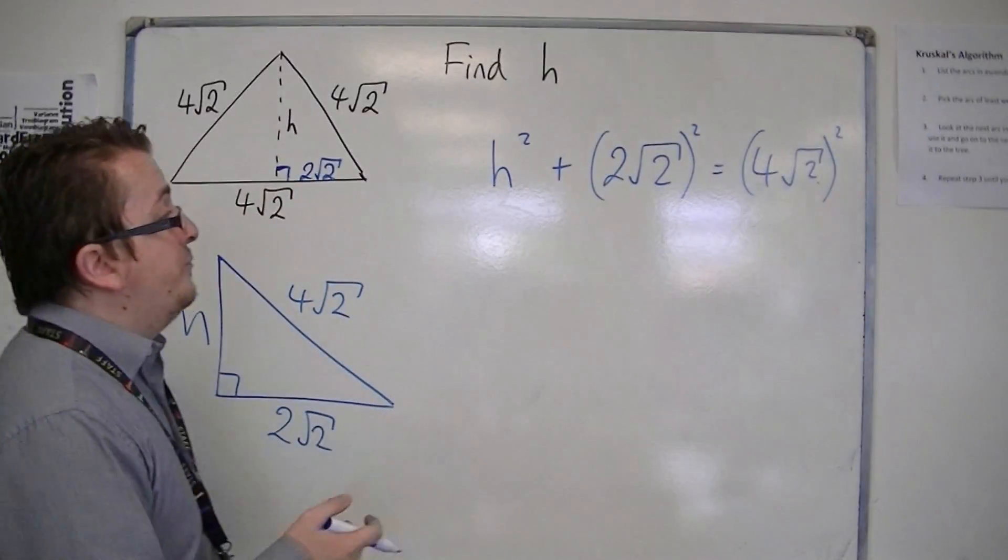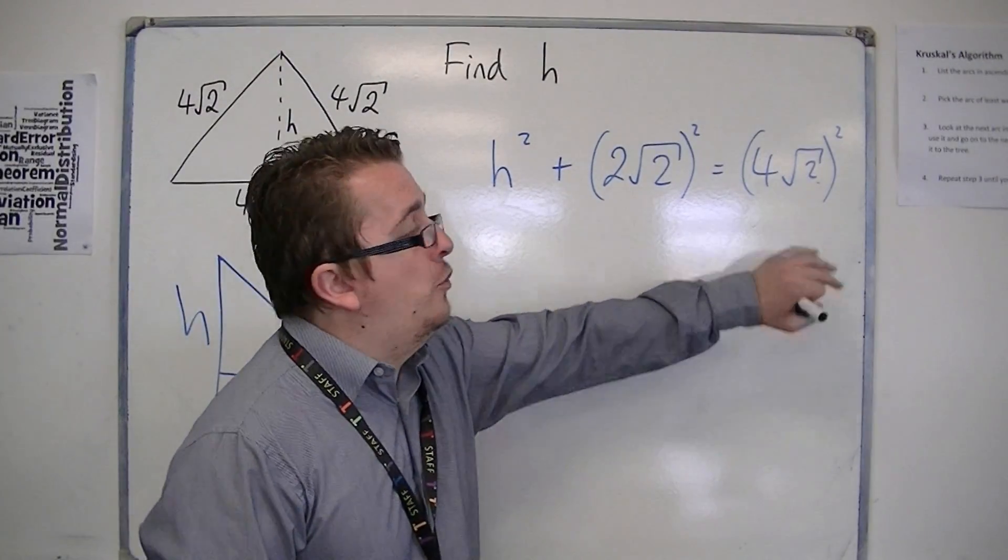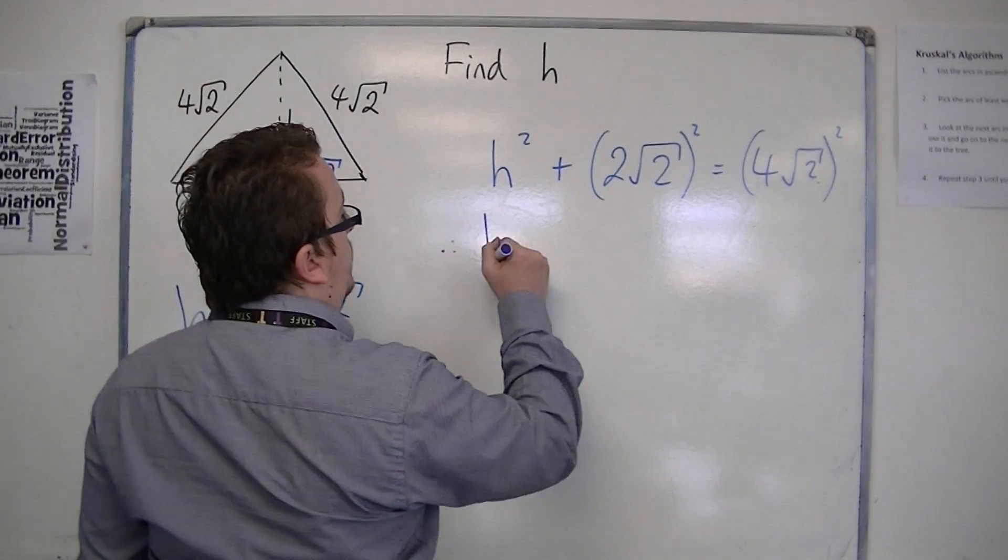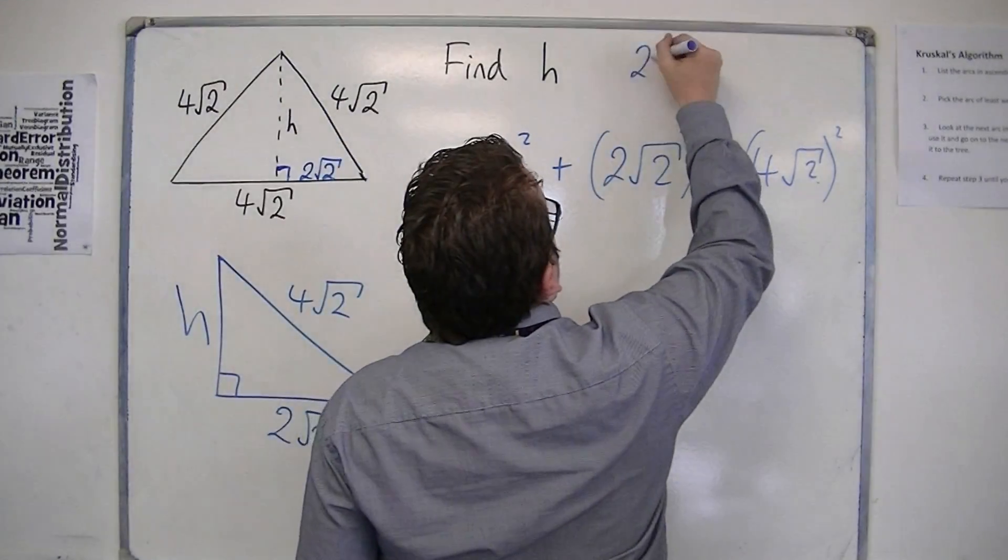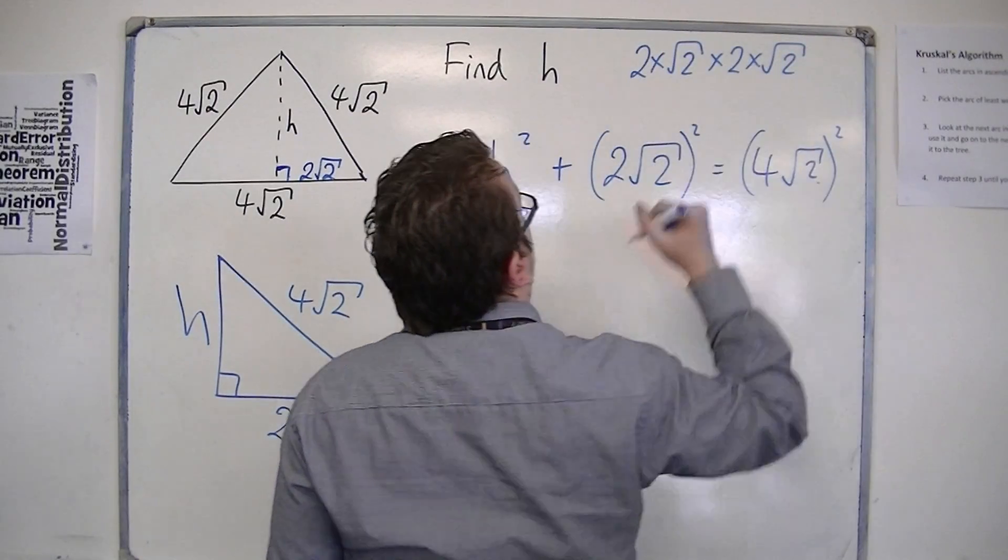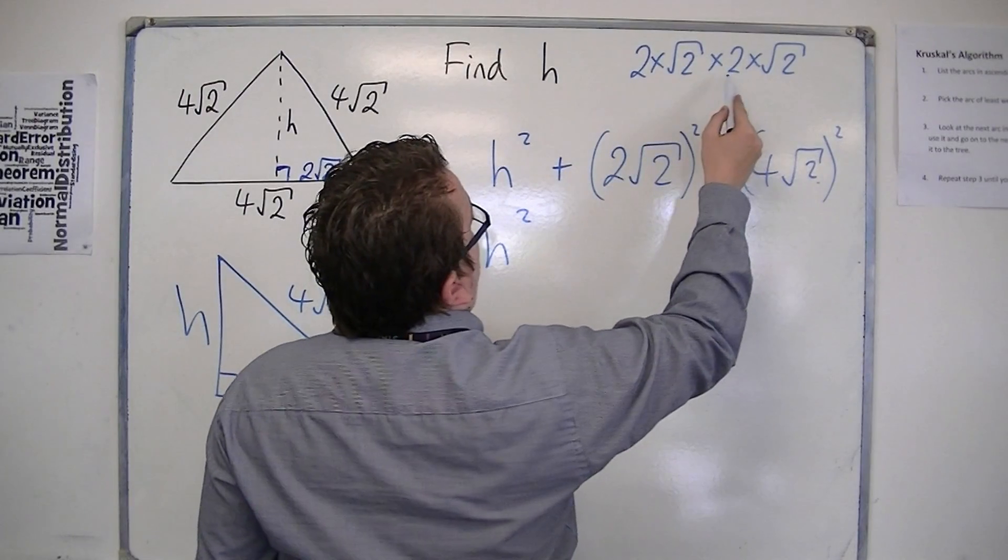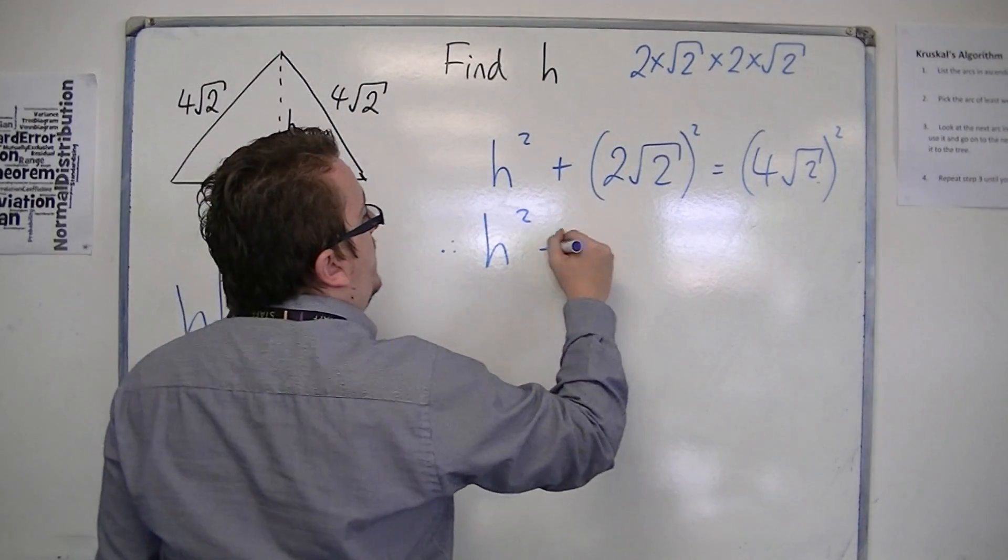So we're going to need to work out what the 2 root 2 squared and the 4 root 2 squared actually are. So, 2 root 2 all squared is the same as 2 times root 2 times 2 times root 2. So we have 2 times 2 is 4, root 2 times root 2 is 2. So this is the same as 8.